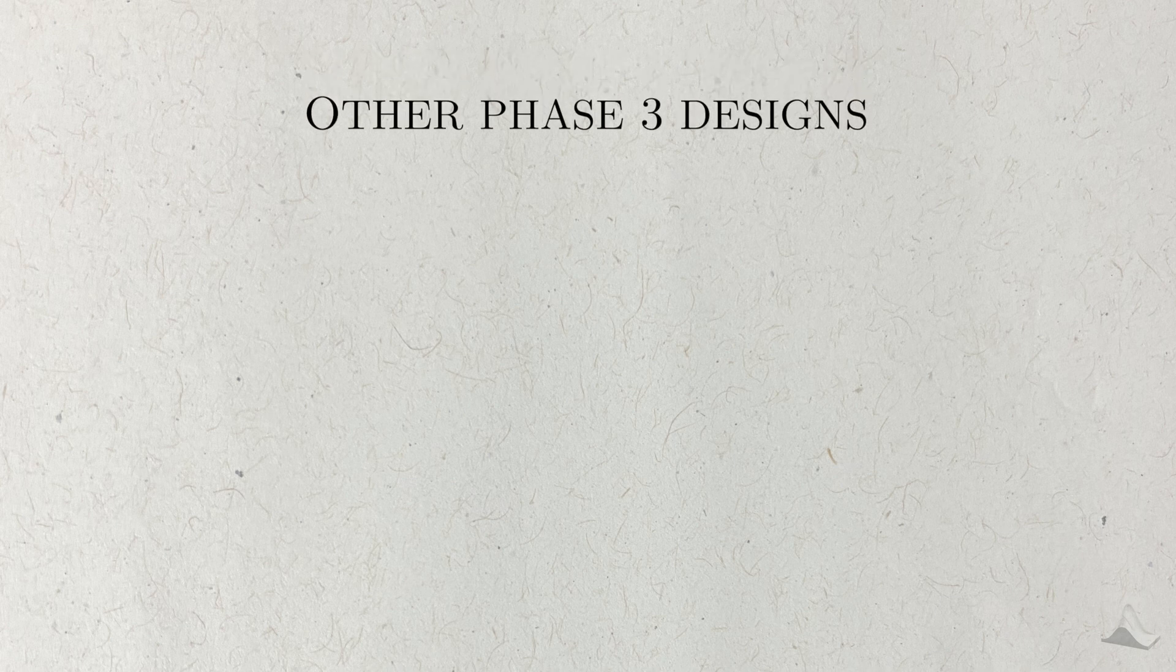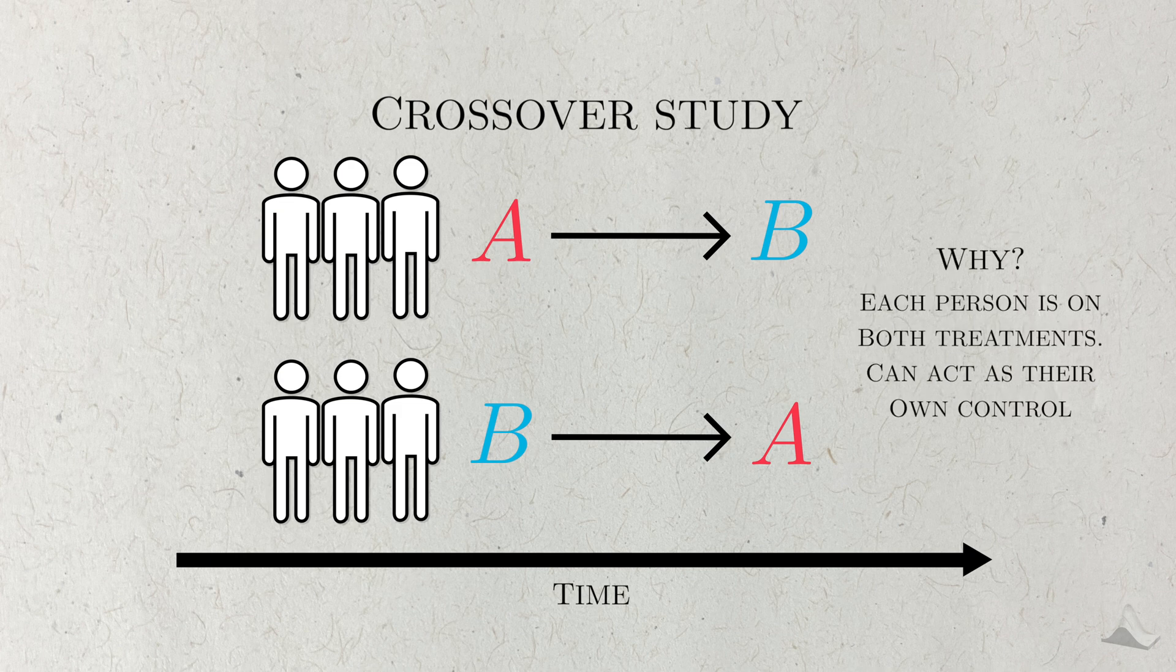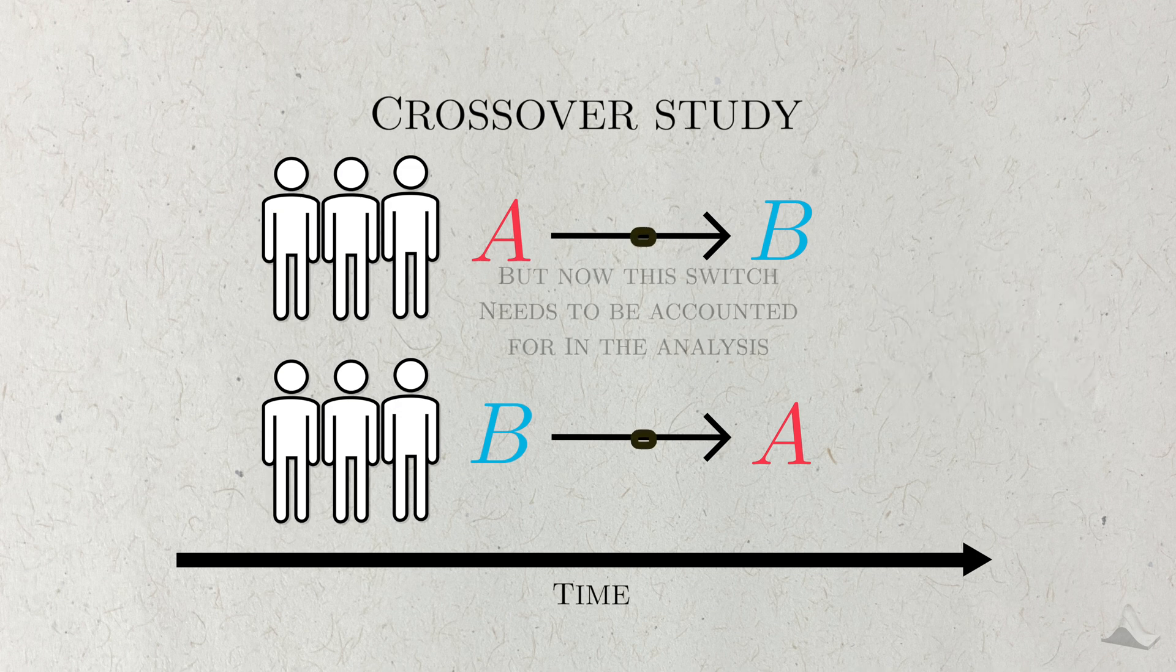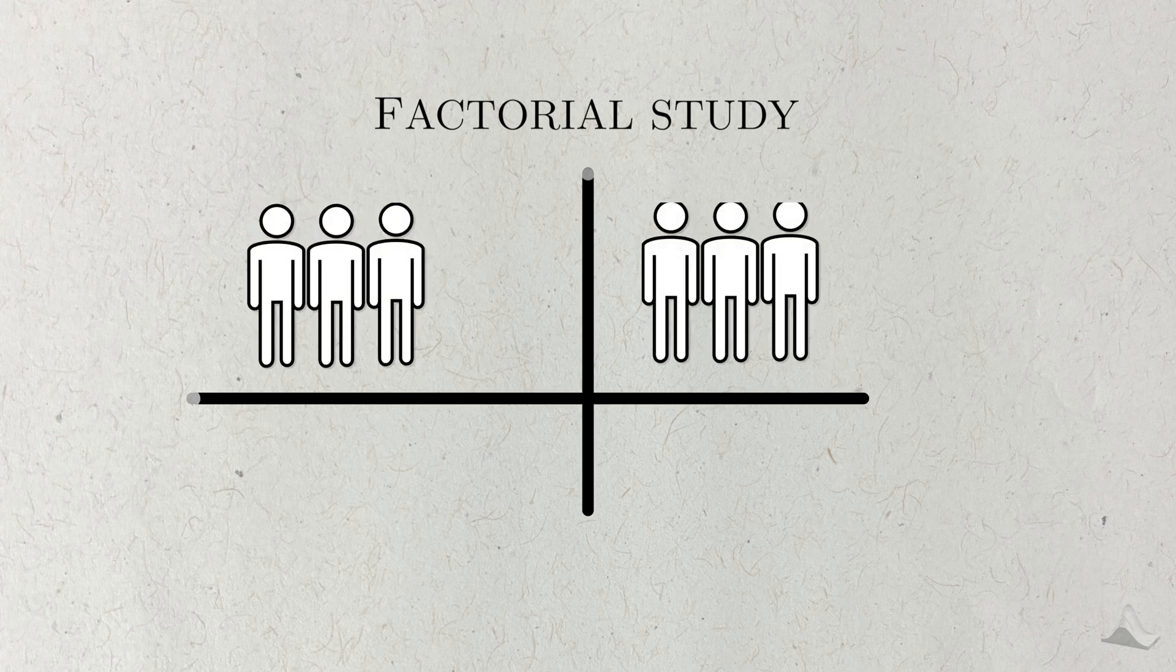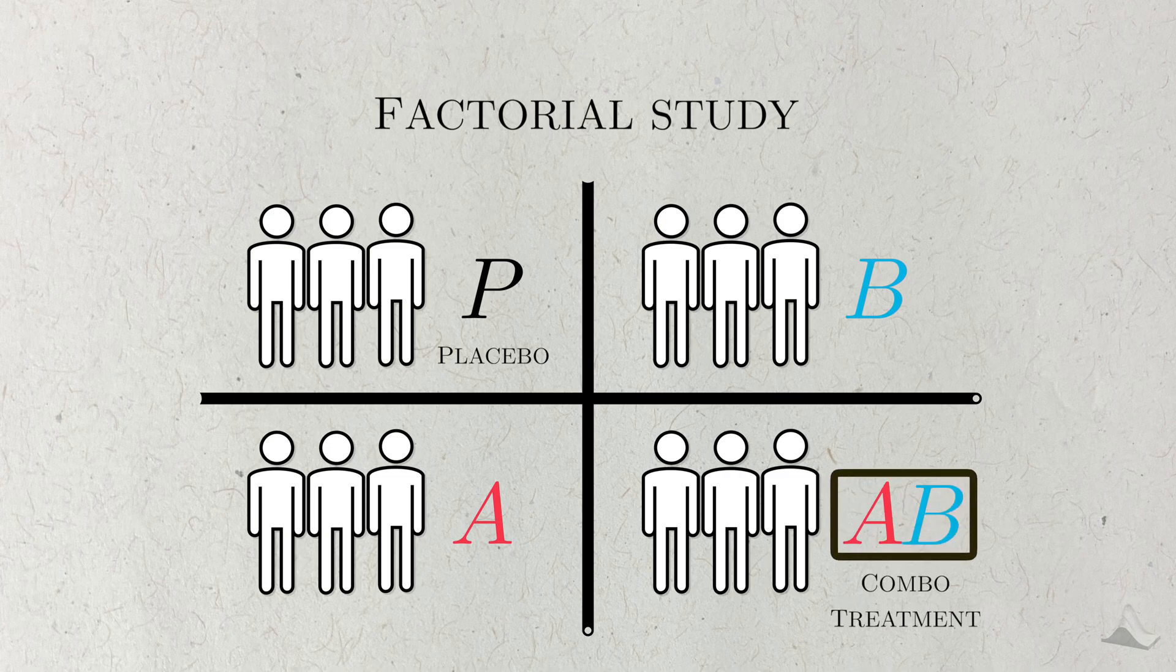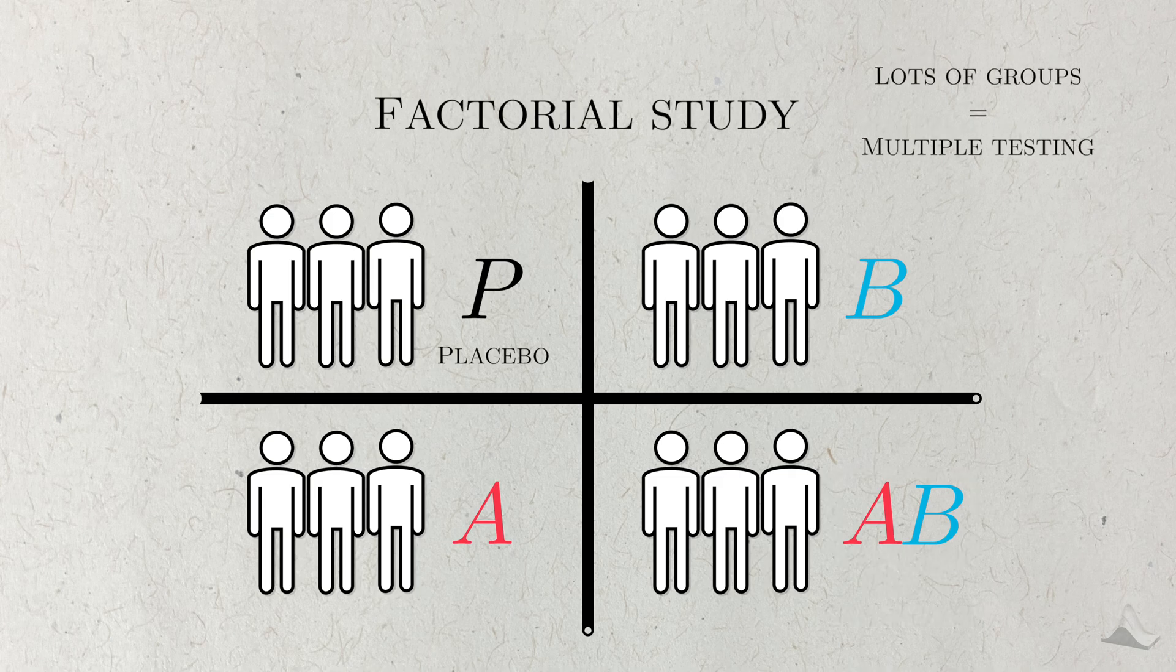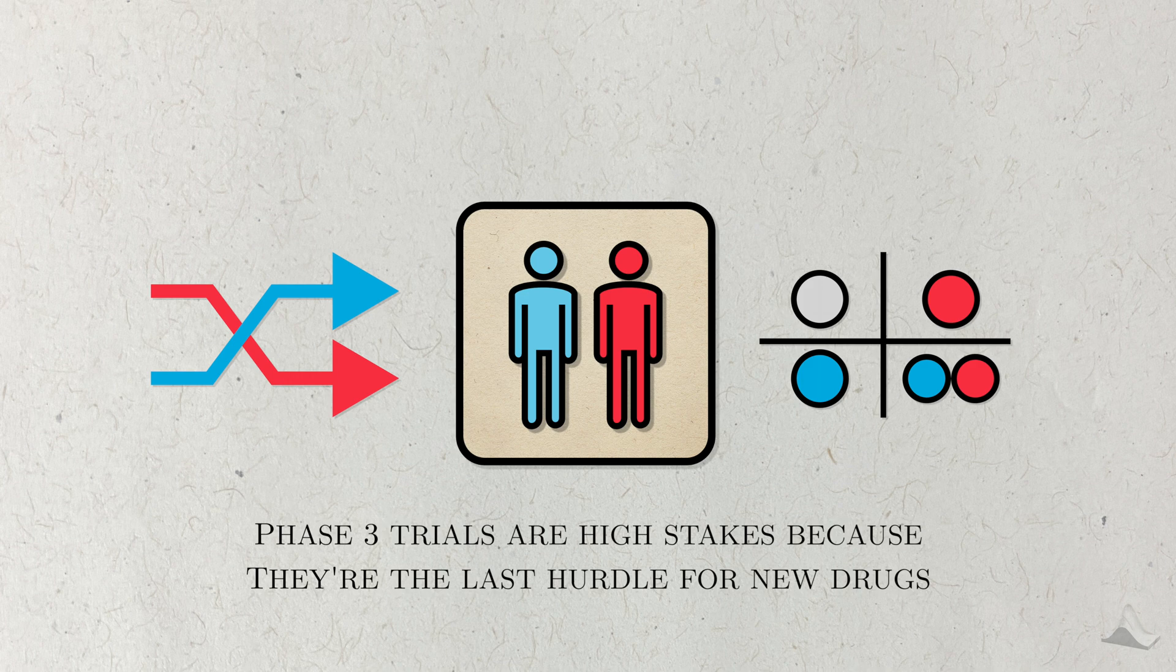Some other popular designs in the phase 3 space are the crossover study and the factorial study. In a crossover study, the two treatment groups start in their initial group, but are then switched to the other group at some point in the trial. The idea here is that you can see both treatments work in each person, so each person can act as their own control. But now you have to account for possible carryover effects when you switch treatments. In factorial designs, you test different combinations of different treatments. One group may just get one active treatment, but others might actually get a combination of multiple treatments. This allows us to investigate possible interactions between drugs. But then we start running into multiple testing issues, since there are multiple parameters of interest in the factorial design.